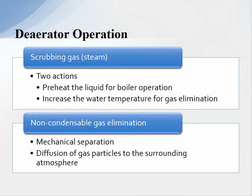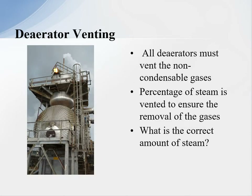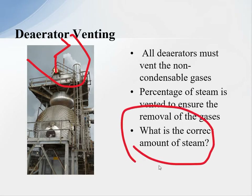Scrubbing steam serves two actions: it preheats the liquid for boiler operation and increases the water temperature for gas elimination. Non-condensable gas elimination involves mechanical separation and diffusion of gas particles to the surrounding atmosphere. All deaerators must vent a percentage of steam, because we have to get the non-condensable gases to come out of solution and out of the deaerator. On top of the deaerator there should be steam being vented out, as you can see in the picture. We need to know what is the correct amount of steam to vent to ensure we're moving all the non-condensable gases.